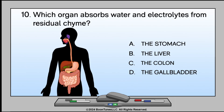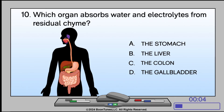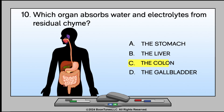Which organ absorbs water and electrolytes from residual chyme? A. The stomach. B. The liver. C. The colon. D. The gallbladder. The answer is C: The colon.